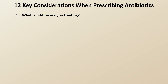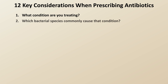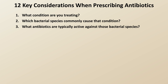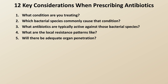What condition are you treating? Which bacterial species commonly caused that condition? What antibiotics are typically active against those bacterial species? What are the local resistance patterns like? Will there be adequate organ penetration? That is, not all antibiotics reach therapeutic levels in every organ. What is the preferred route of administration? Usually a distinction between oral or intravenous, though some antibiotics can also be given intramuscularly or topically.